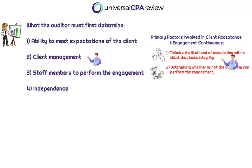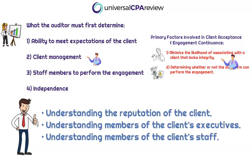At a high level, we want to limit our likelihood of associating with shady clients. More specifically, what makes a shady client? The auditor wants to know who's working in key management positions. This will help Detective Lucy understand if this is an engagement that might lead to high risk, which will ultimately increase the likelihood that the financial statements will be misstated, leading to more work and greater liability for the auditor.